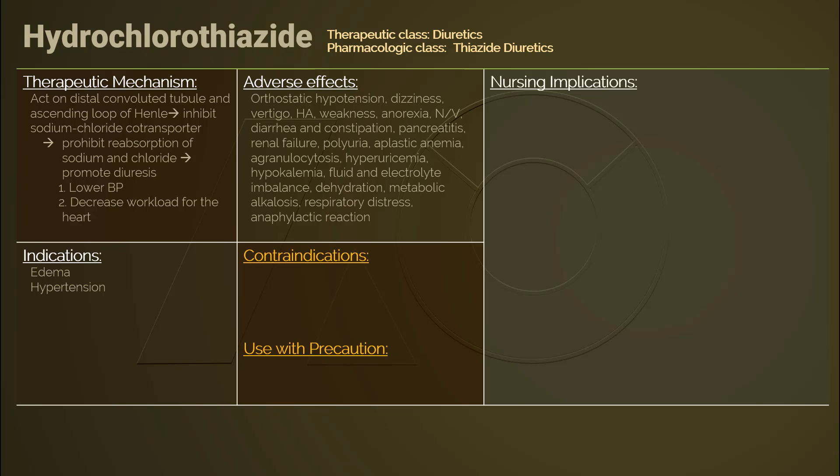GI adverse effects include stomach discomfort, diarrhea and constipation, and nausea and vomiting. Affecting the central nervous system, hydrochlorothiazide can induce dizziness, vertigo, headache, and weakness.